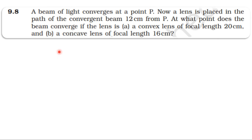From the NCRT textbook, from the topic Ray Optics and Optical Instruments, topic 9.8. A beam of light converges at a point P. Now a lens is placed in the path of the convergent beam, 12 cm from P. At what point does the beam converge if the lens is: (a) a convex lens of focal length 20 cm, and (b) a concave lens of focal length 16 cm?